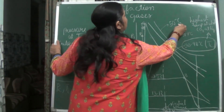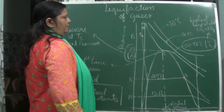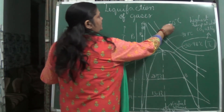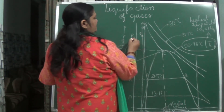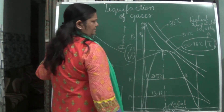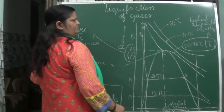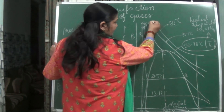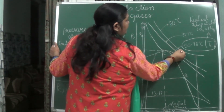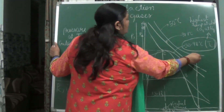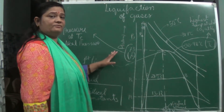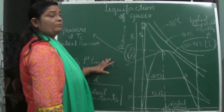At 50 degrees Celsius, the pressure P3 is more than 73 atmospheric pressure. He saw that carbon dioxide is existing in the gaseous form only.